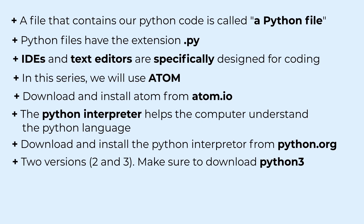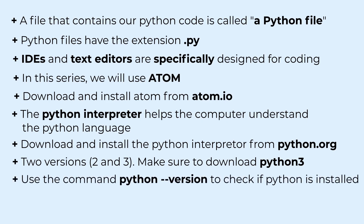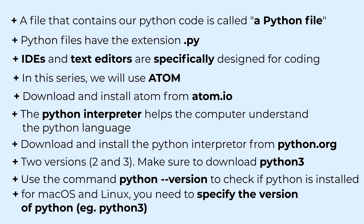We made sure to check the box that said 'Add Python 3 to PATH,' which is very important because that is what allows us to use it in the terminal. After doing that we came to our terminal and verified that Python is installed by checking the version using the command python --version. If you are on a Mac or Linux, make sure to specify python3 to indicate the particular version you are using.